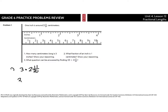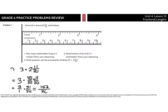This becomes 3 times — now 2 is the same thing as 40 over 20, plus the 11 over 20. So this is going to become 3 over 1 times 2 and 11/20ths. As an improper fraction, that is 51 over 20. Looking at this, there's nothing I can really simplify here. So 3 times 51 is 153 over 20.